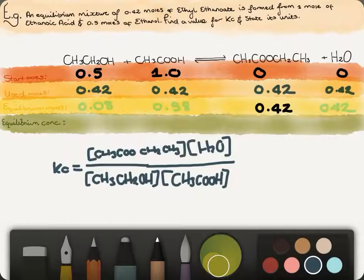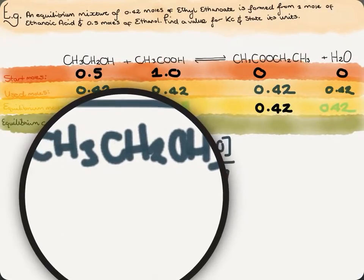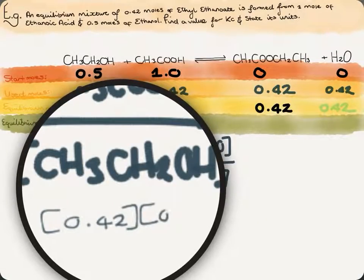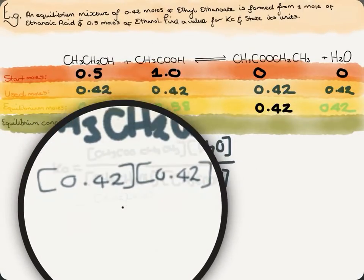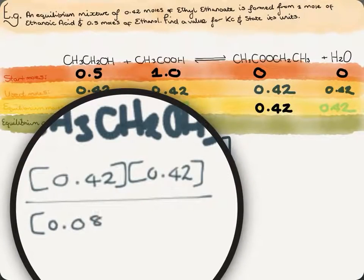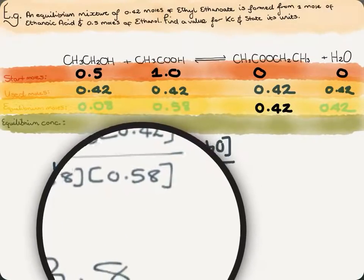We just plug in the numbers: Kc equals 0.42 multiplied by 0.42, divided by 0.58 multiplied by 0.08. Plugging this in, you will get a Kc value of 3.8, and in terms of units, there are no units.